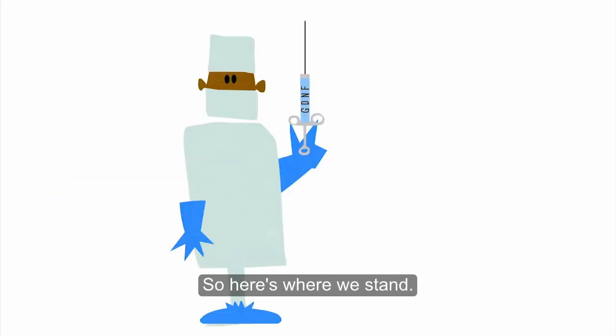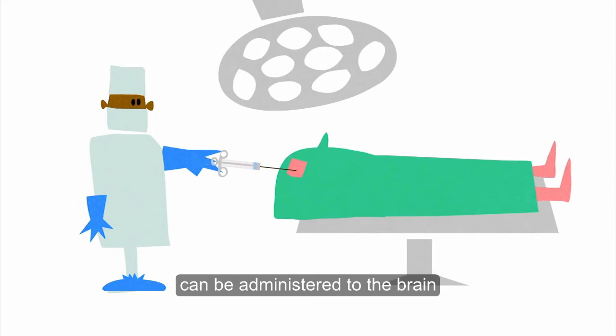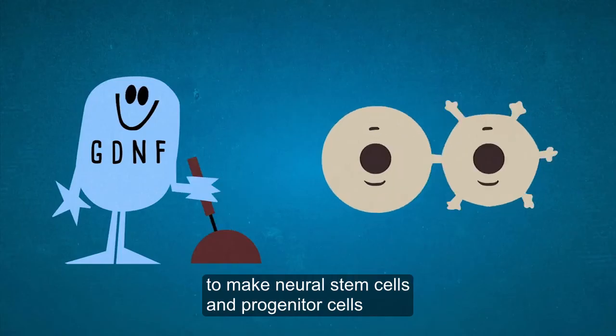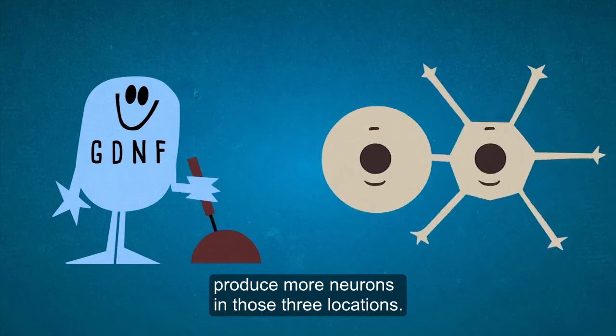So here's where we stand. Certain proteins and other small molecules that mimic those proteins can be administered to the brain to make neural stem cells and progenitor cells produce more neurons in those three locations.